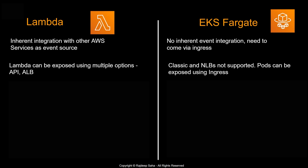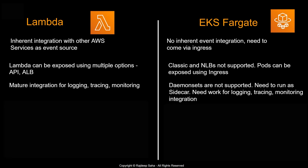Lambda has mature integration for logging, tracing, and monitoring — it integrates directly with CloudWatch, X-Ray, and others, without requiring a lot of additional configuration. For EKS Fargate, you have to take some additional steps. Daemon sets are not supported, so you need to run logging, tracing, and monitoring services as a sidecar. Some reworking is required for EKS Fargate.